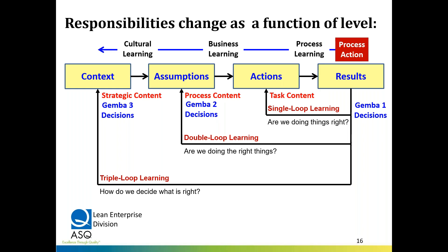We can look at this as triple loop learning. Starting at process action in Gemba One we get results — that's a Gemba One decision, is it right? Single loop learning asks: are we doing things right? If not, it's problem solving. Double loop learning asks a different question: are we doing the right things — have we gotten all the projects we need? This is about how we operate and design our processes. In Gemba Three, triple loop learning is about strategic content: how do we decide what's right, get the timeframe, get synchronization, get interaction effects of different projects for a coherent approach, and blend together technical systems and human systems — that's why we need the cultural emphasis. Each Gemba is actually a learning environment.